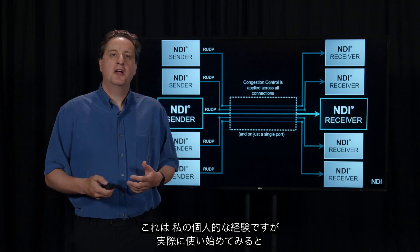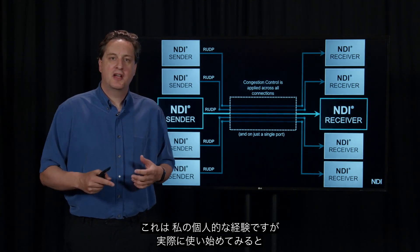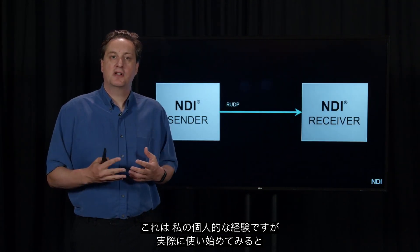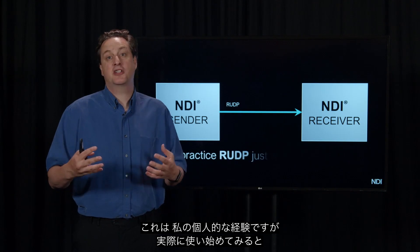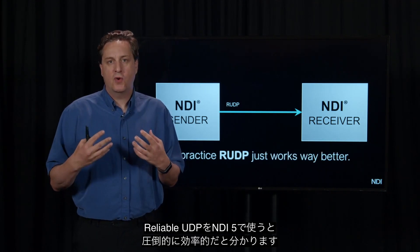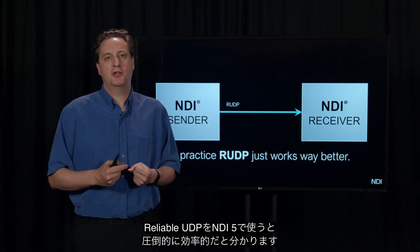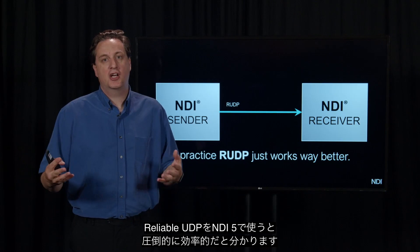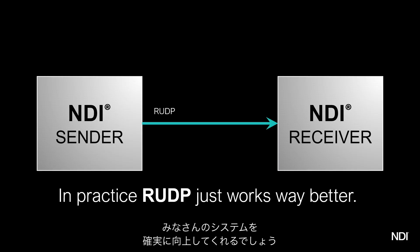When you actually start to use this, the key thing — and this has just been my personal experience — is that when you're using Reliable UDP with NDI 5, it just works better. I feel very confident in saying that this is hopefully a feature you never really know is there, but it just makes your system work better.